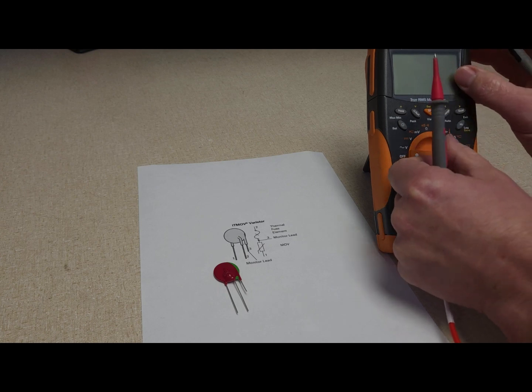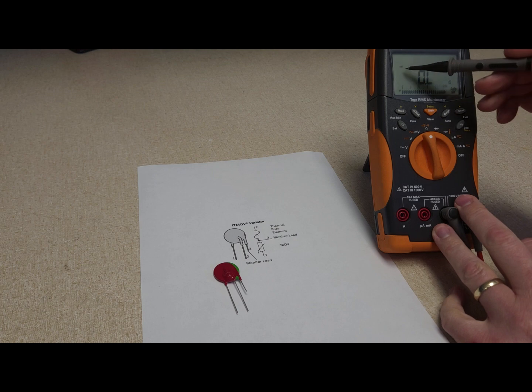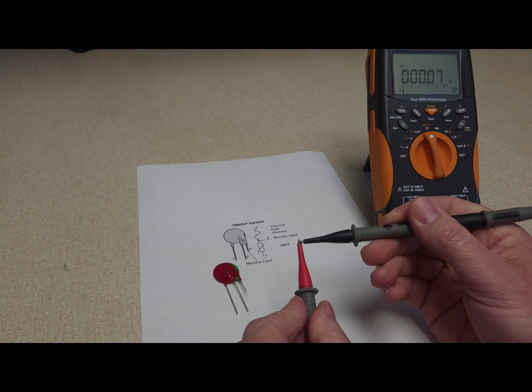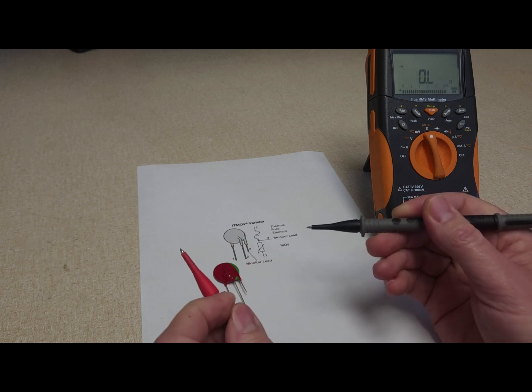We'll take our meter and set it to continuity. That's this little symbol here and you can see it shows continuity right there. In continuity the meter beeps and goes to zero whenever you have a closed connection.